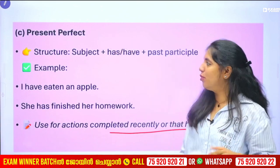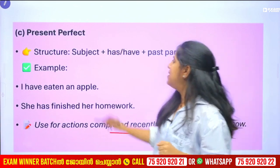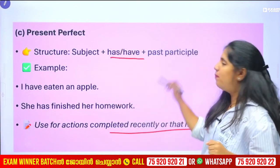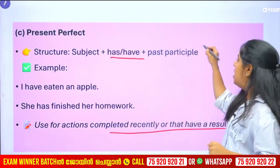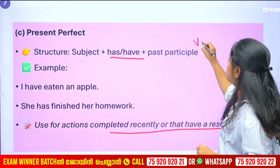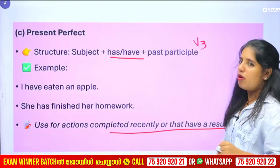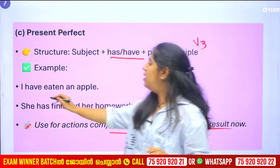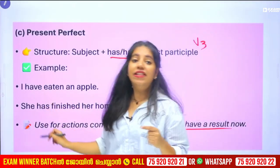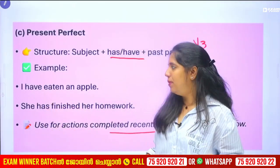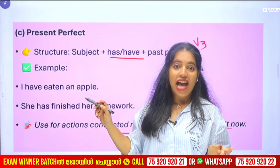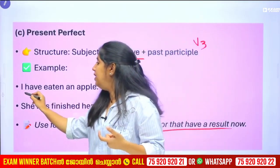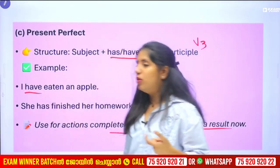Present perfect uses: subject plus have or has plus past participle. For example, I have eaten an apple. She has finished her homework.